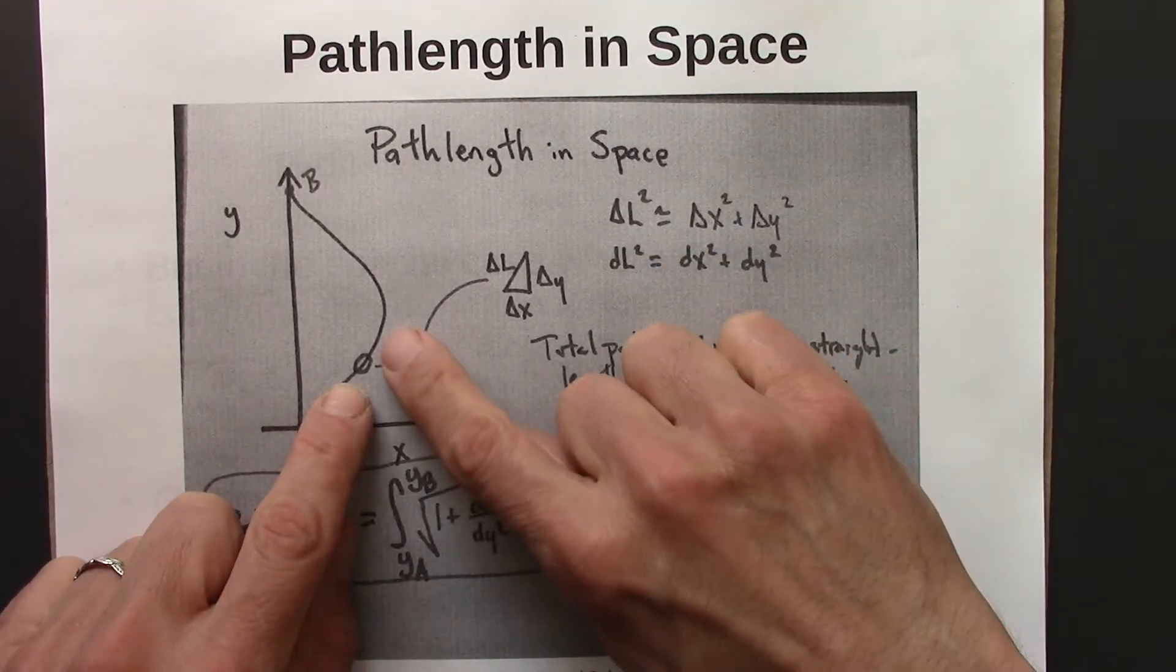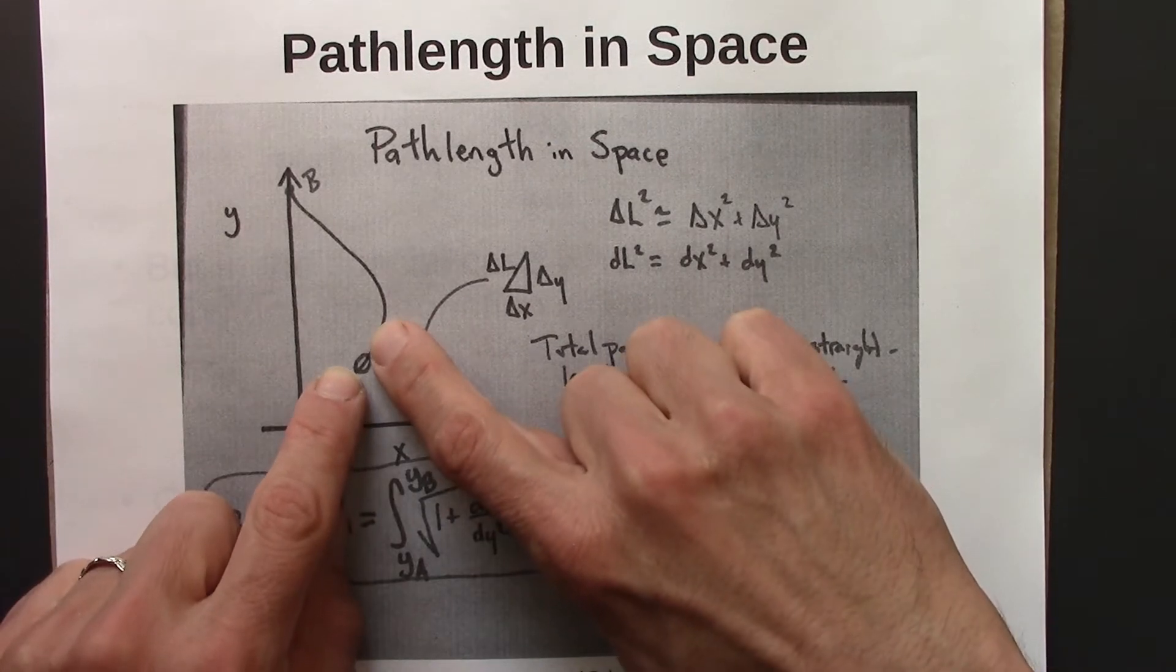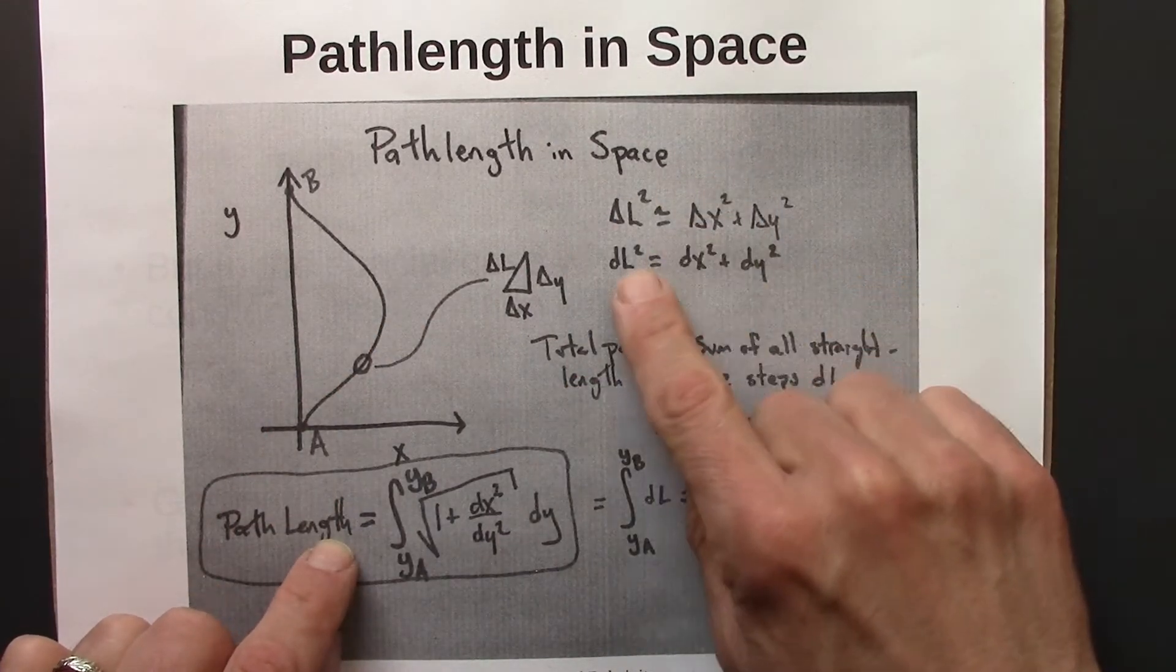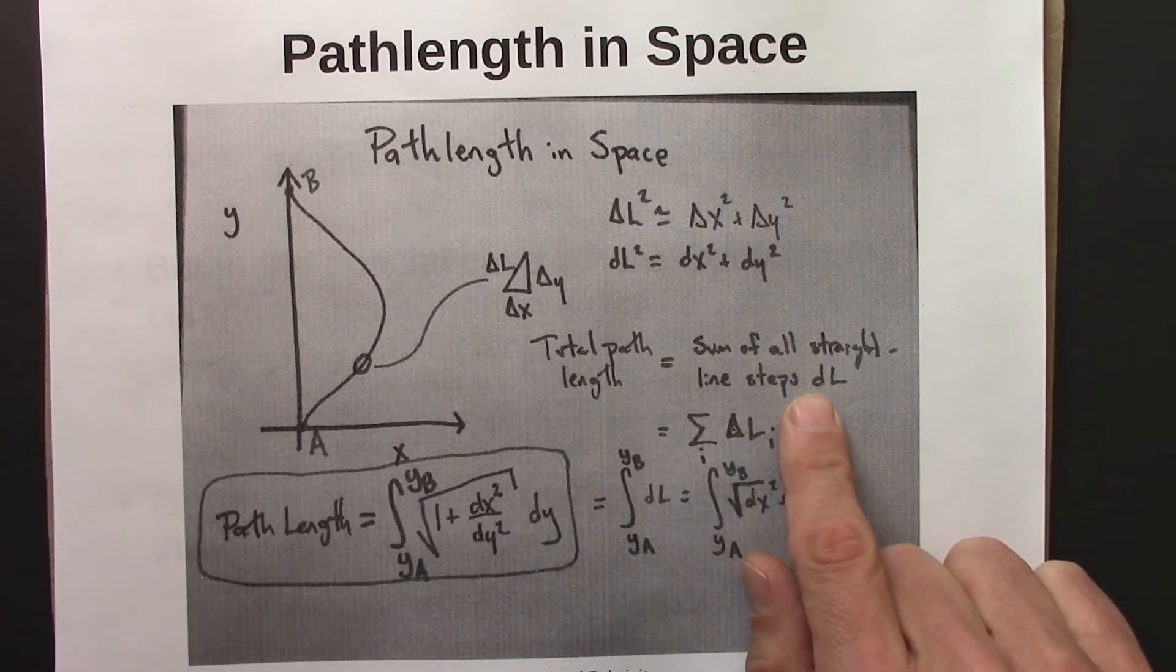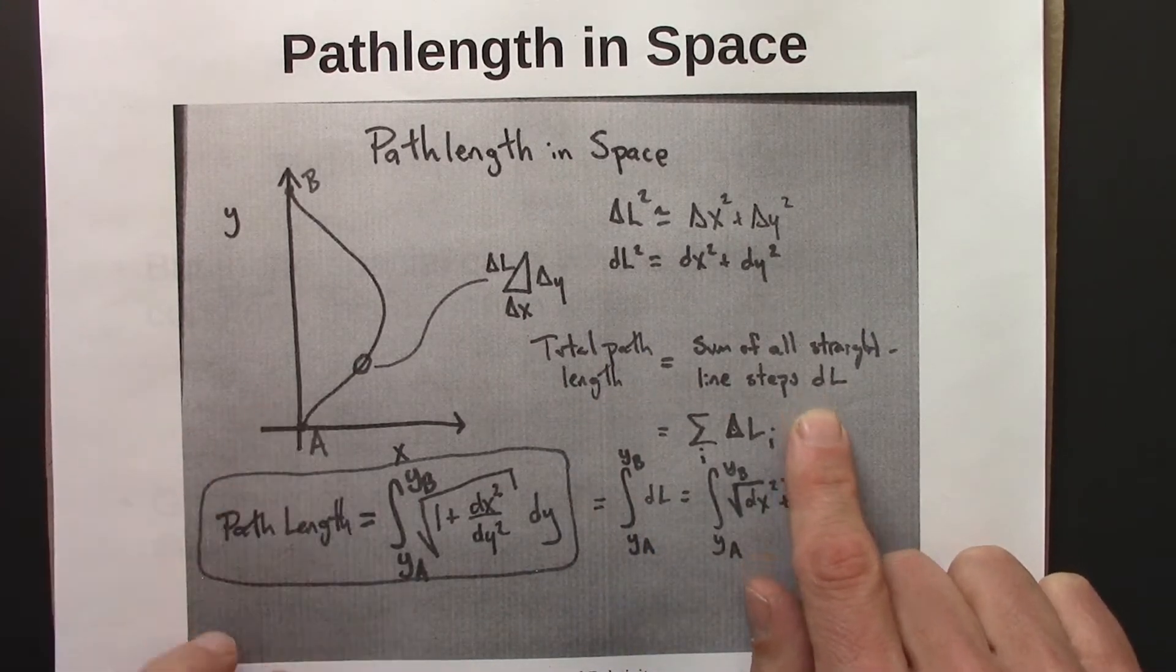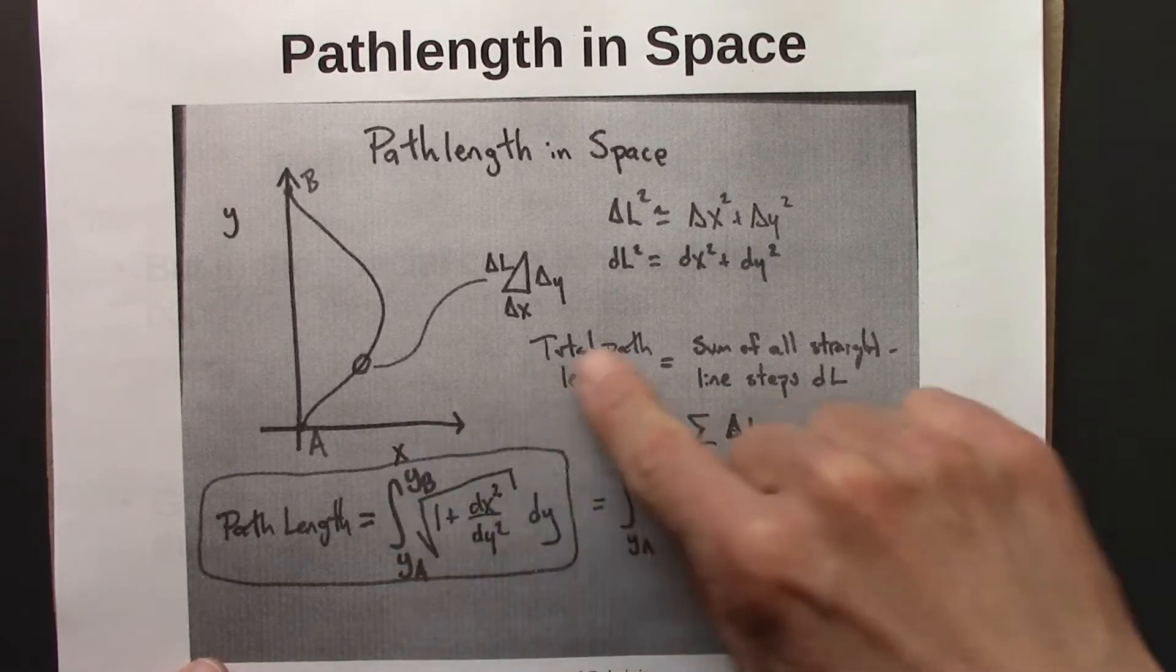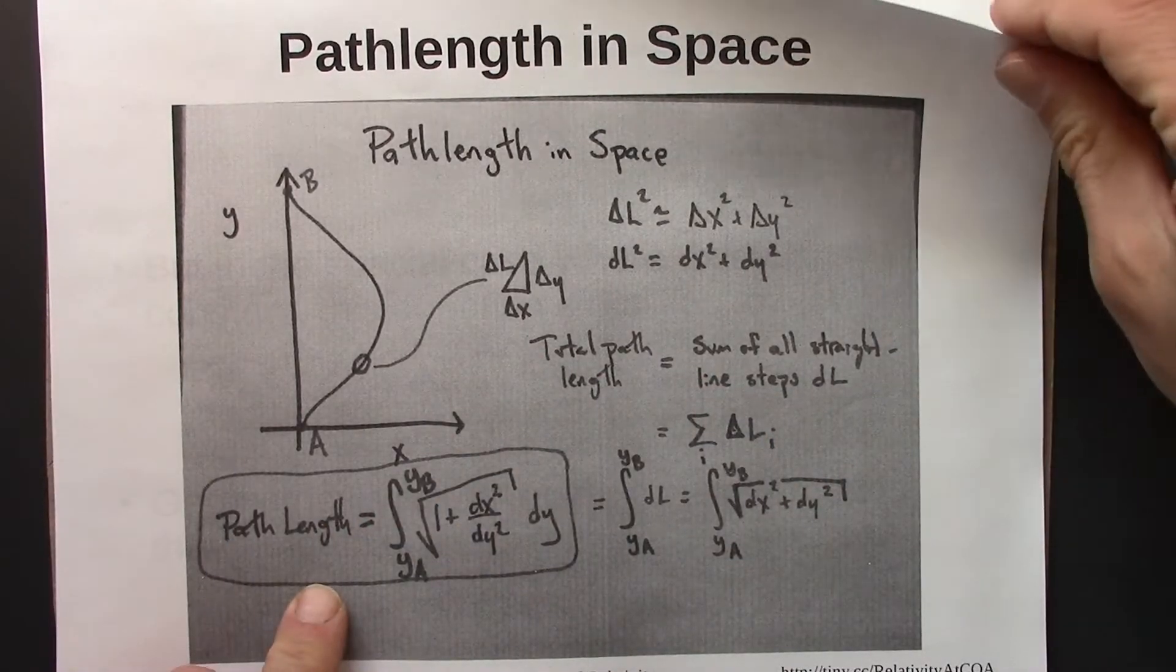So what we said was, alright, well, let's just view this curve as a whole bunch of tiny little straight lines, figure out the length of all those, and then the total path is just the sum of all the straight lines that make up this curve. And then this is all the fancy math for that. And in calculus, it looks like this.